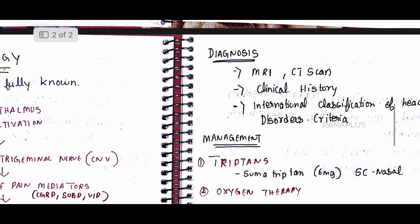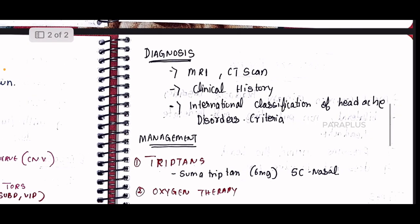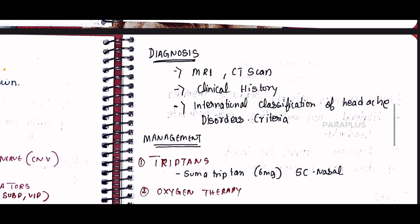For diagnosis, you look at the imaging study and the clinical presentation of the patient. You identify the cluster type and its subtypes. Diagnosis is made using the International Classification of Headache Disorders criteria, where you assess the patient against the diagnostic scale and questions.